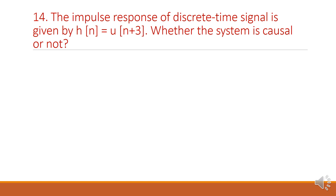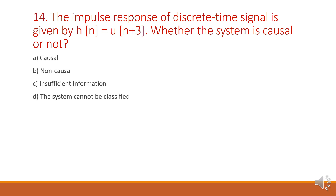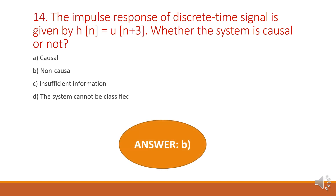Next question: the impulse response of a discrete time signal is given by H of n equals U of n plus 3. Is the system causal or not? U of n plus 3 has values on the left-hand side as well. If the signal has left-hand side values, then it is non-causal. So option B is the right answer.